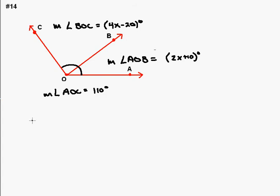So from that, we can come up with an equation. We know that the sum of the two smaller angles is equal to the measure of the larger obtuse angle. So we can write 4x minus 20 degrees plus 2x plus 10 degrees is going to be equal to 110 degrees.